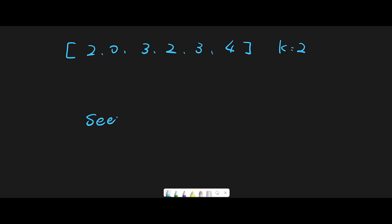We create a 'seen' set — this time it is a set, not a hash map. We iterate through one by one from index 0. First, we found 2 and check if we have 2 in the set — no data, so add 2. Move next, we found 0 — no 0 in set, so add 0. Move next, we found 2 and check if we have 2 in the set. Move next, we found 2 again and check if we have 2 in the set.